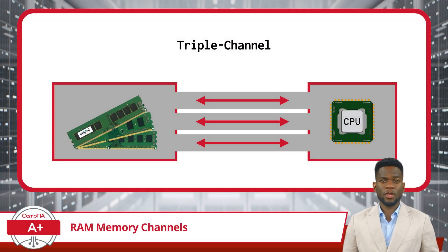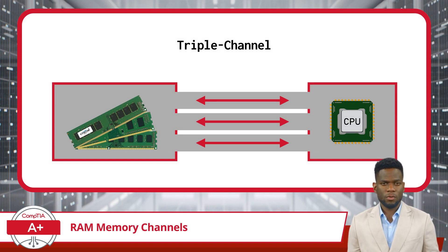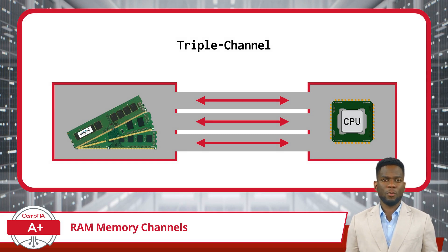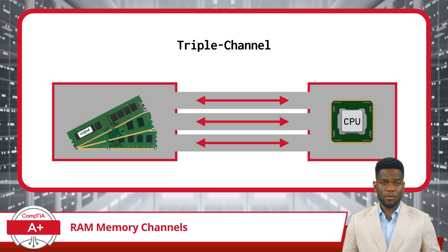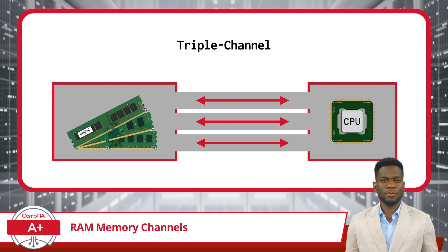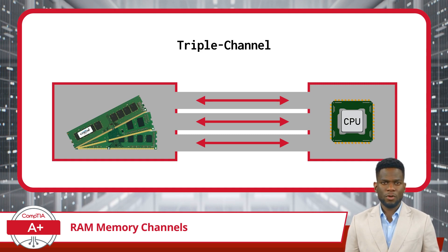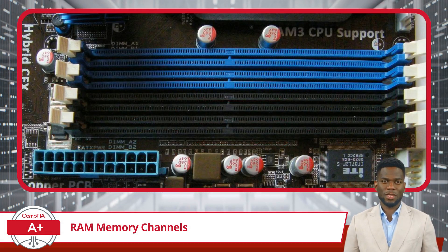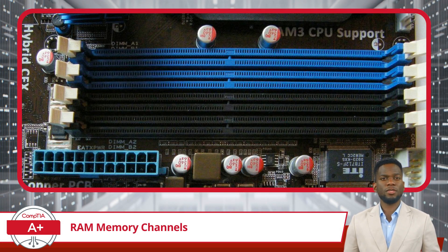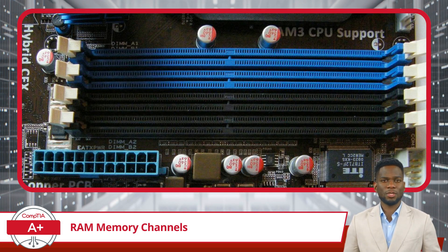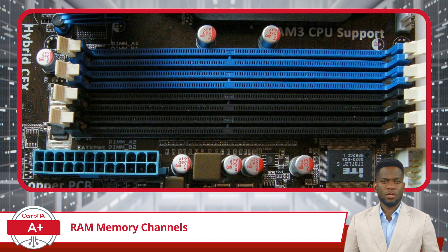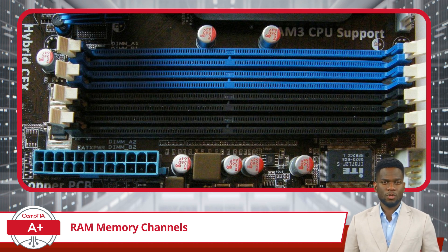Triple-channel configuration takes it a step further by employing three pathways between the CPU and RAM. You can picture this as a major highway with three lanes, capable of handling substantial data traffic with ease. Although less common than dual-channel setups, it offers even higher bandwidth for data transfer. Identifying a triple-channel setup is relatively straightforward — just look for RAM slots in multiples of three. These slots are often situated next to each other and may be color-coded or labeled to indicate their purpose in facilitating triple-channel operations.